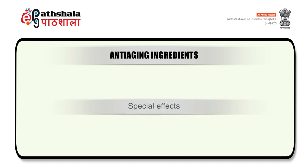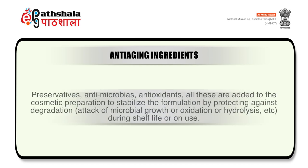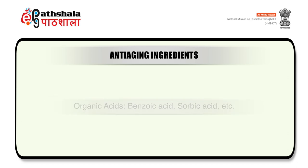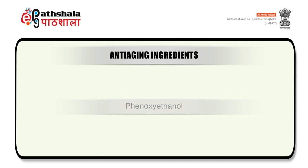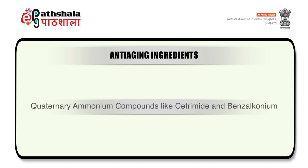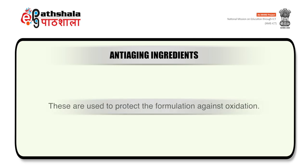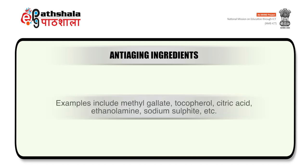The next type of excipient is preservatives. Preservatives, antimicrobials, and antioxidants are added to cosmetic preparations to stabilize the formulation by protecting against degradation during shelf life or on use. There are different classes of preservatives based on chemical nature: organic acids (examples benzoic acid, sorbic acid), esters of parahydroxybenzoic acids (examples propyl ester or methyl esters), chloroform, chlorocresol, phenoxyethanol, quaternary ammonium compounds like cetrimide and benzalkonium chloride, and organic mercurial compounds like phenyl mercuric nitrate. Antioxidants are used to protect formulations against oxidation; examples include methyl gallate, tocopherol, citric acid, ethanolamine, sodium sulfite, etc.